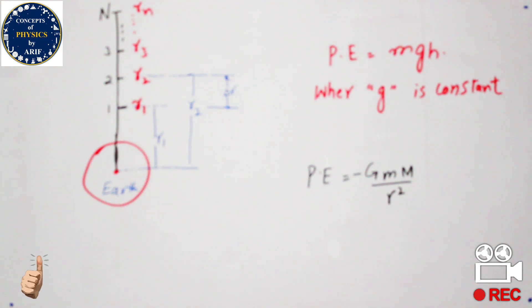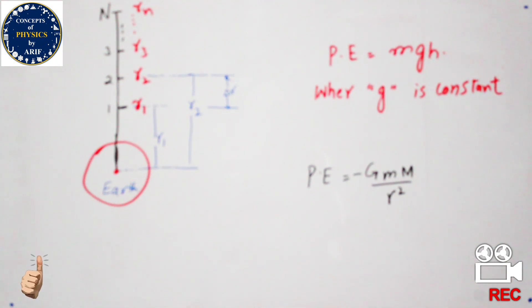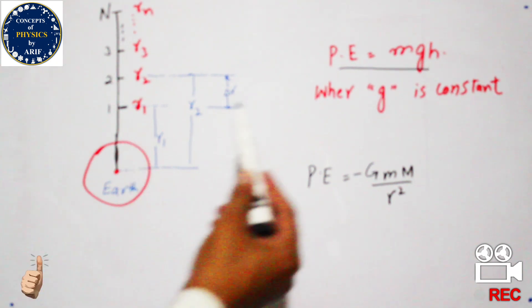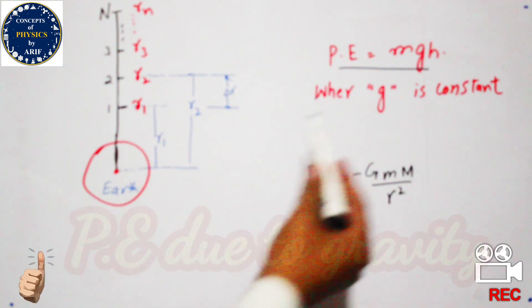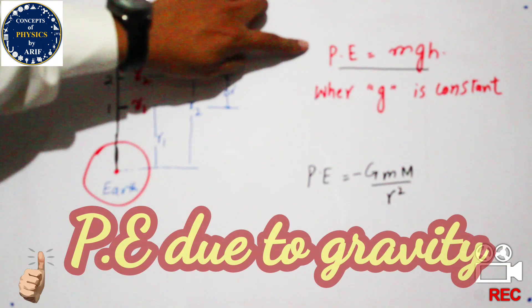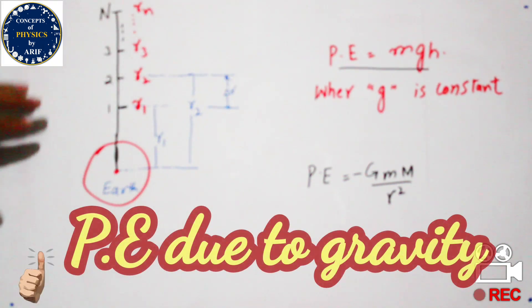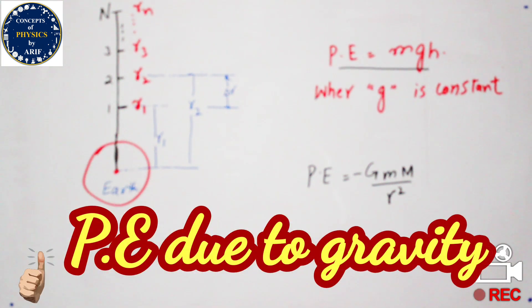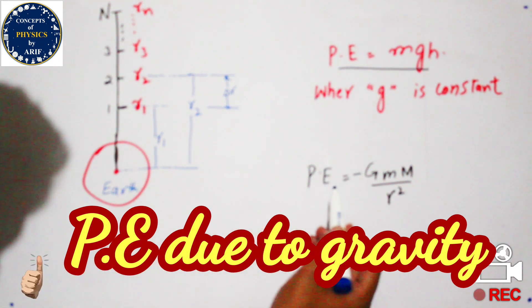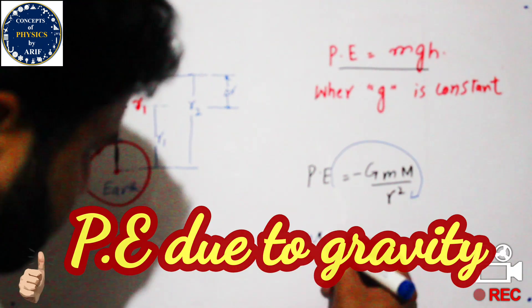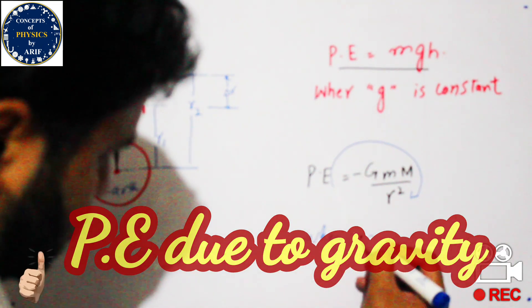We know that the formula of potential energy is equal to mgh. This formula is applied and holds true when the value of g, the gravitational constant, remains the same — that is, when the body is near the center of the Earth or the surface of the Earth. But this potential energy is inversely proportional to the scale of the distance between the object and the final point.